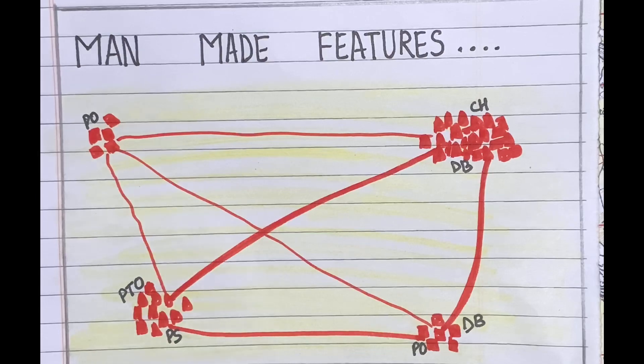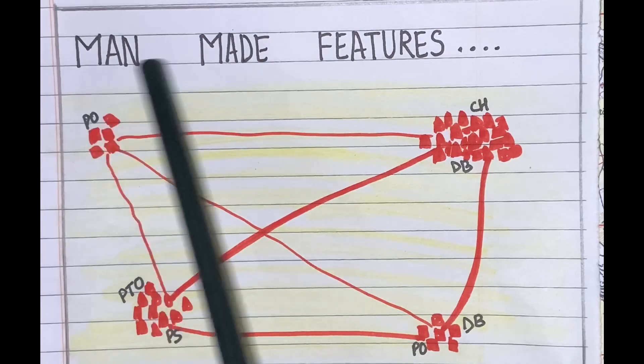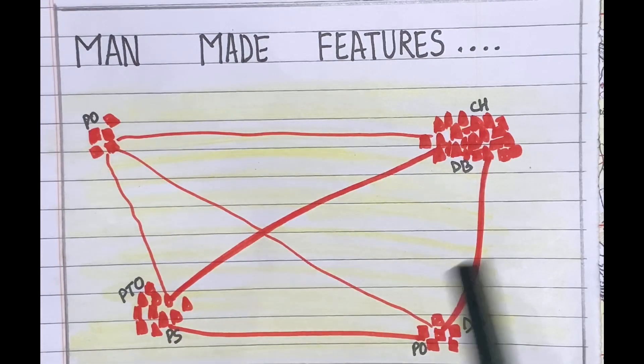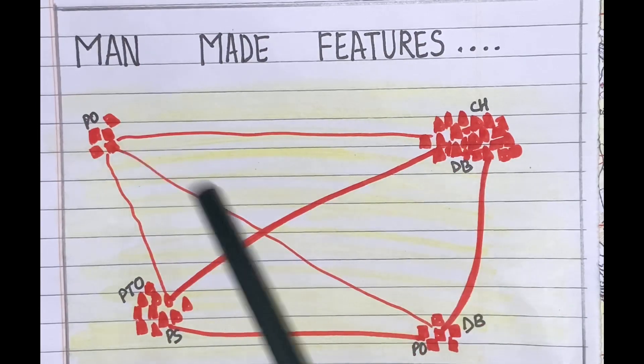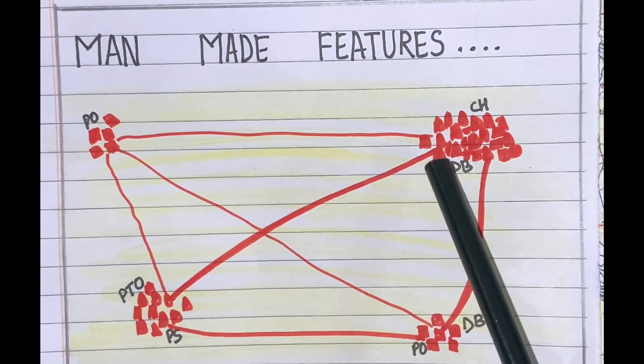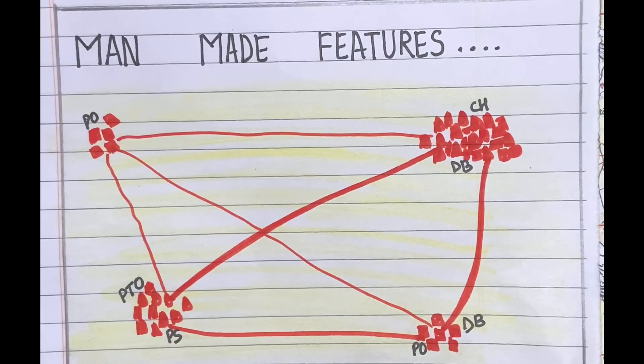In the topographical maps, man-made features such as houses, cart track, roads, metal roads, buildings such as post office, dark bungalow, circuit house, police station, etc. are shown by various conventional signs and symbols.